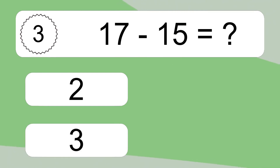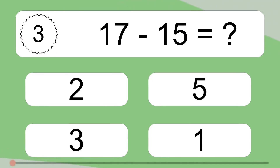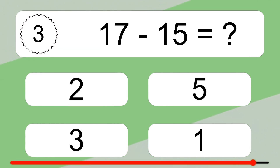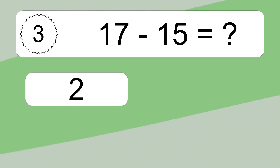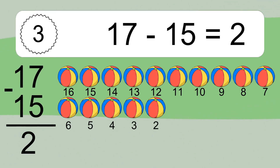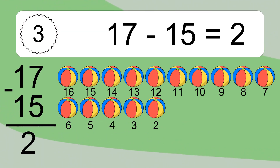17 minus 15 equals what? 17 minus 15 equals 2. Let's count it. 16, 15, 14, 13, 12, 11, 10, 9, 8, 7, 6, 5, 4, 3, 2.